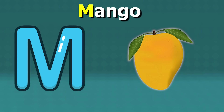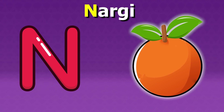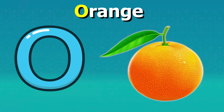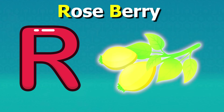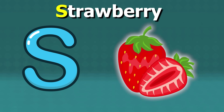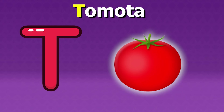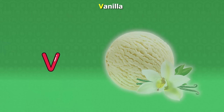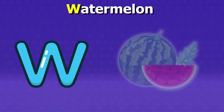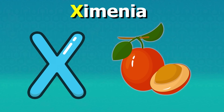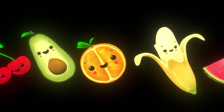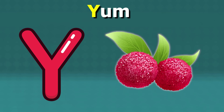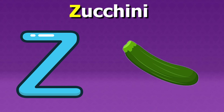M for mangoes, N for nectarine, O for oranges, P for pears, Q for quince, R for raspberries, S for strawberries, T for tomato, U for ugly fruit, V for vanilla, W for watermelon, X for ximenia, Y for yuzu, Z for zucchini.